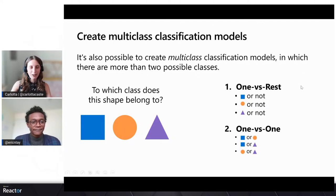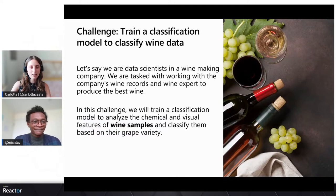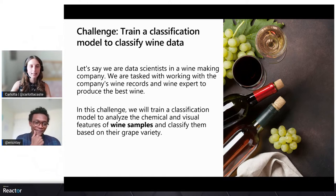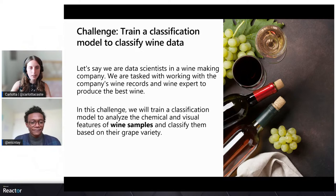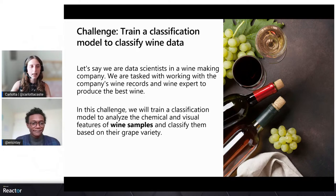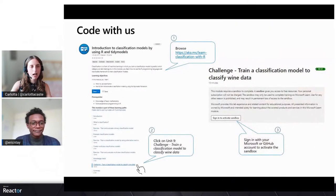Let's put some of these concepts into practice with a hands-on challenge. Let's get our hands dirty by digging into some R code. For this challenge, imagine we are data scientists in a winemaking company tasked with working with wine records. In this workshop, we'll train a multi-class classification model to analyze the chemical and visual features of wine samples and classify them based on the grape variety — the cultivar. Eric, can you show us how we can access the code for this challenge?